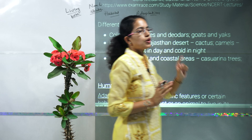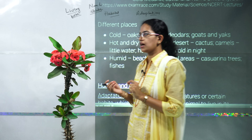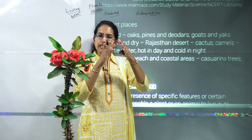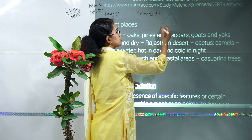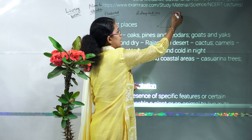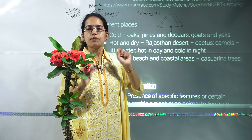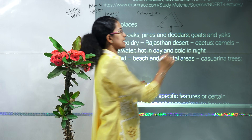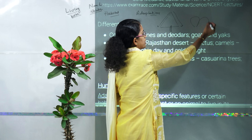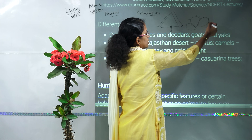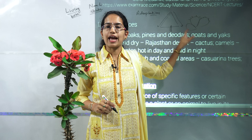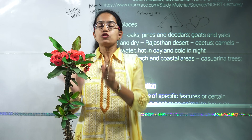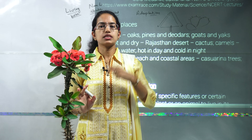For different areas you have different kinds of adaptations. For example, in a cold area you would have conical trees — the basic reason is so that snow would run down and the plant would not be affected. In a desert area we hear about cactus as a plant with thorns, but here we have a cactus plant which has flowers on it.